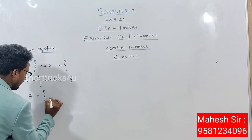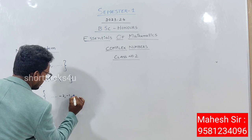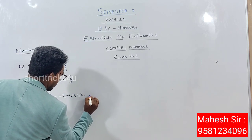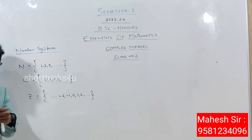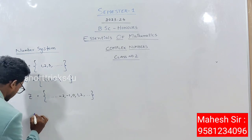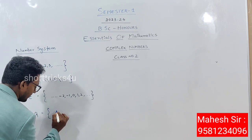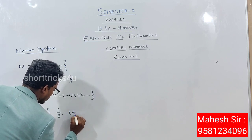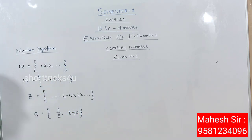Integers include all negative values. Then we have rational numbers — numbers in A/B or P/Q form, where Q is definitely not equal to zero. These are called rational numbers.